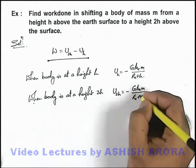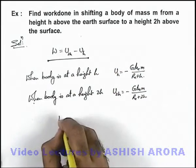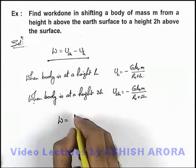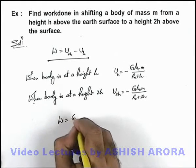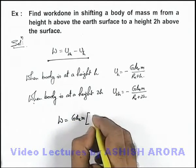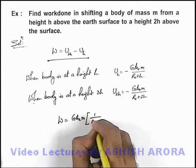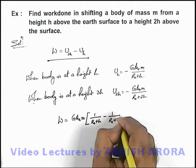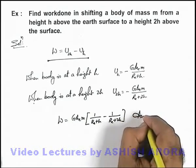So if we substitute the values here, the work done can directly be written as U_2h minus U_h. When we do this we can take GMm common, and inside we're having 1 by R_e plus h minus 1 by R_e plus 2h. That'll be the answer to this problem.